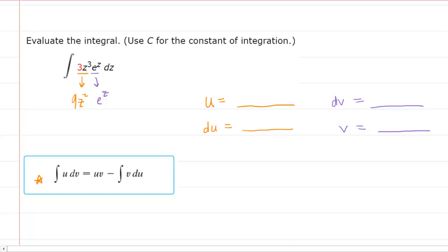Whereas in the former case, we went from a cubic polynomial down to a quadratic polynomial, which in principle is slightly simpler. So it will turn out that the most effective selection here for u will be 3z cubed. So we will let u equal 3z cubed.